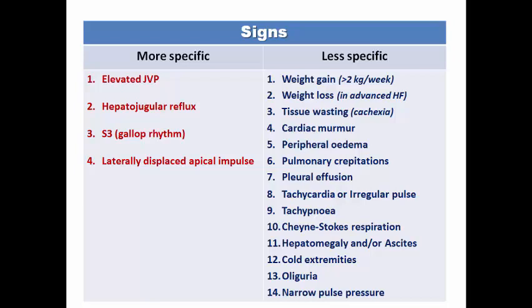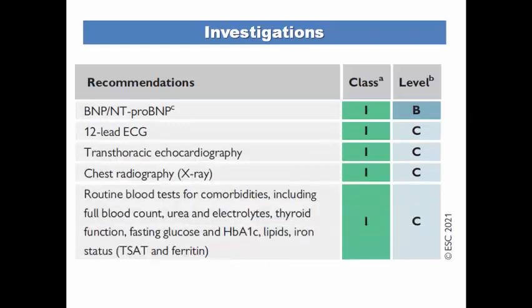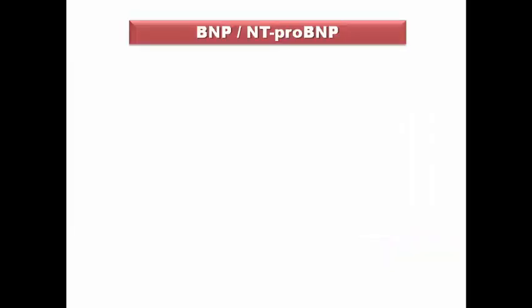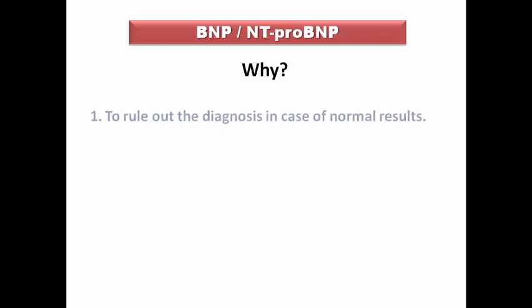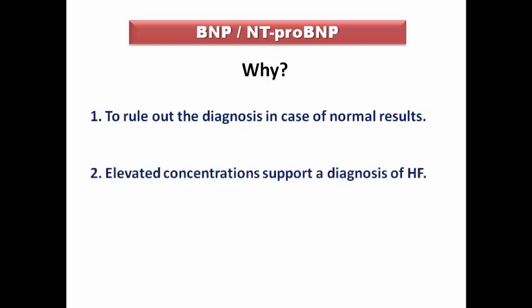Because these less specific signs may occur in heart failure and other conditions, we need meticulous history taking and examination. After completing history and examination, we move to investigations. Basic tests with class 1 recommendation include natriuretic peptides such as B-natriuretic peptide and N-terminal pro-BNP. They can rule out the diagnosis if normal, or support the diagnosis if elevated, and are also useful as a prognostic tool.